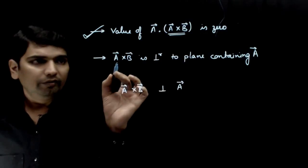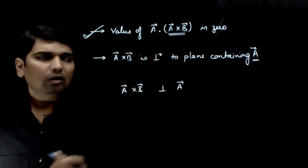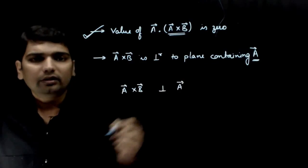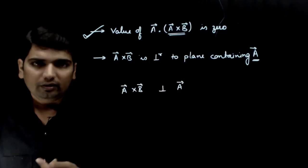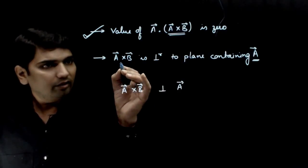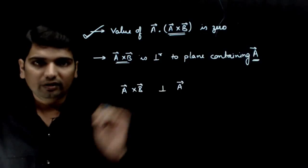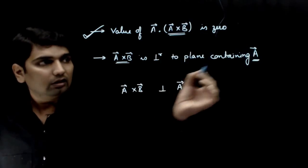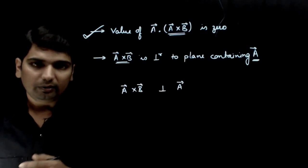But the next statement says A vector cross B vector is perpendicular to plane containing A vector. Now, there is not just one plane that contains A vector. There will be infinite planes that contain A vector. A vector cross B vector is perpendicular to the plane that contains both A vector and B vector. But is it perpendicular to every plane containing A vector? We need to check this.